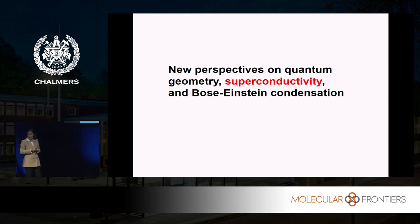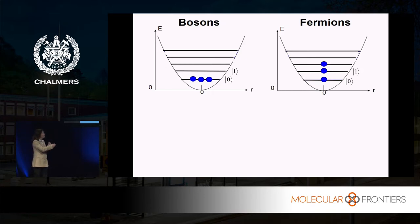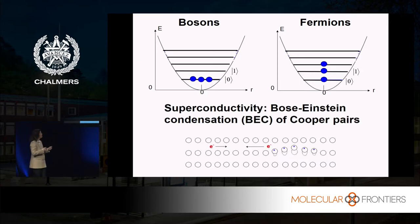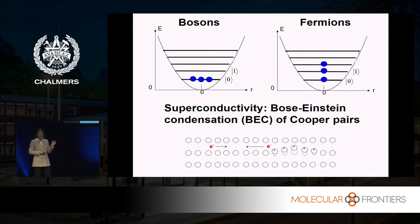Now about superconductivity. Since bosons can condense, you can ask: can we condense fermions? Obviously they cannot go to the same state. But if you make pairs out of two fermions, they actually form a boson, and then you can condense them. That's what is behind superconductivity — the phenomenon where electrical current flows without any resistance. In a material, two electrons somehow interact, for instance via the lattice of atoms, and they make a pair. Those pairs all go to the same state.